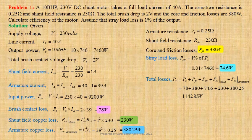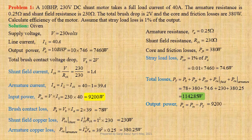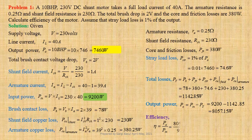By subtracting total losses from input power we get output power. PO equals PIN minus PT, that is 9200 minus 1142.85, giving us 8057.15W. Efficiency: eta equals PO by PIN, that is 8057.15 divided by 9200, giving us 0.8758 per unit or 87.58%.